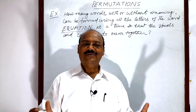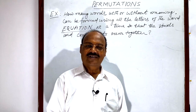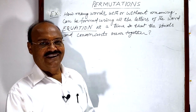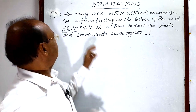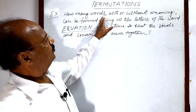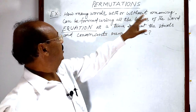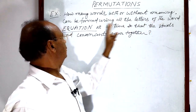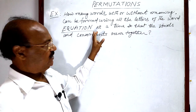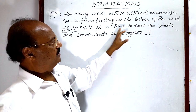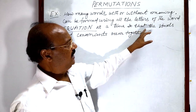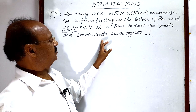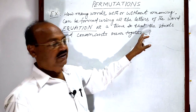Welcome students. Let us see today a very interesting question from the topic permutation. The question is: how many words with or without meaning can be formed using all the letters of the word EQUATION at a time, so that the vowels and consonants occur together.